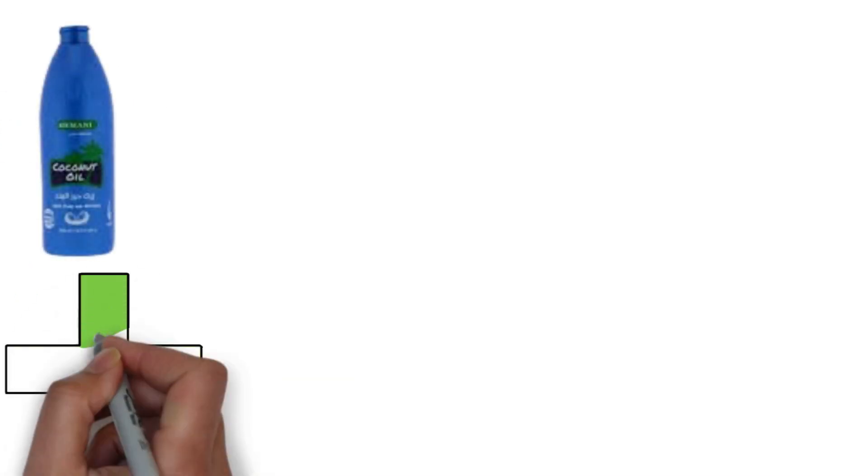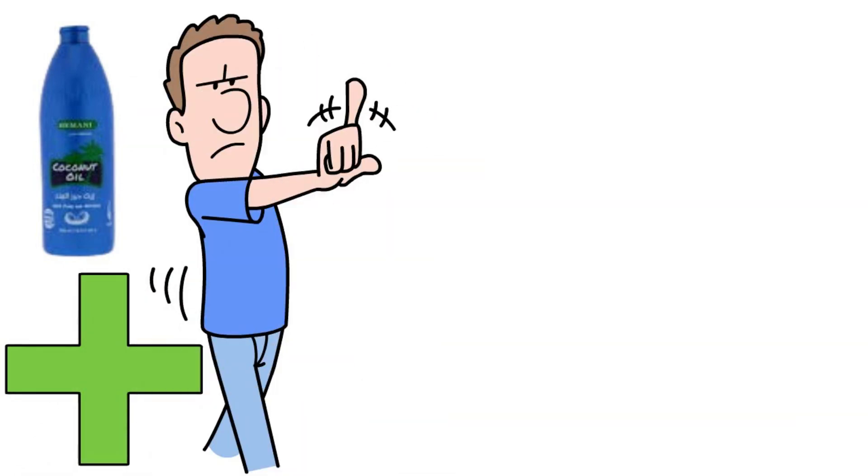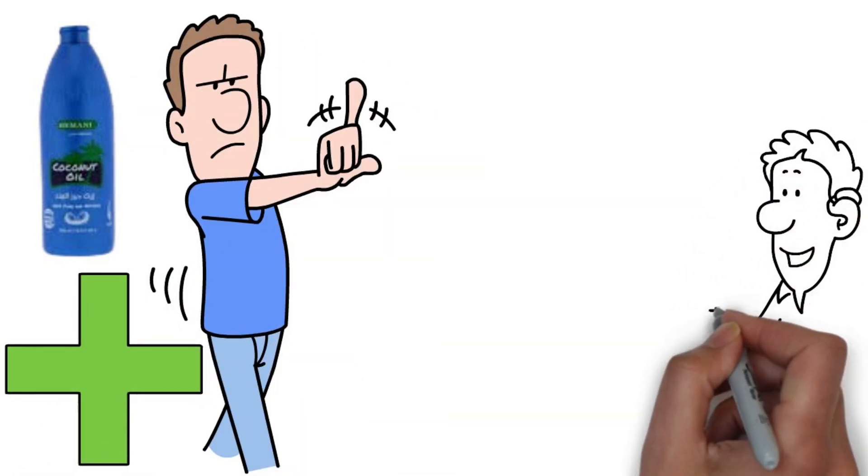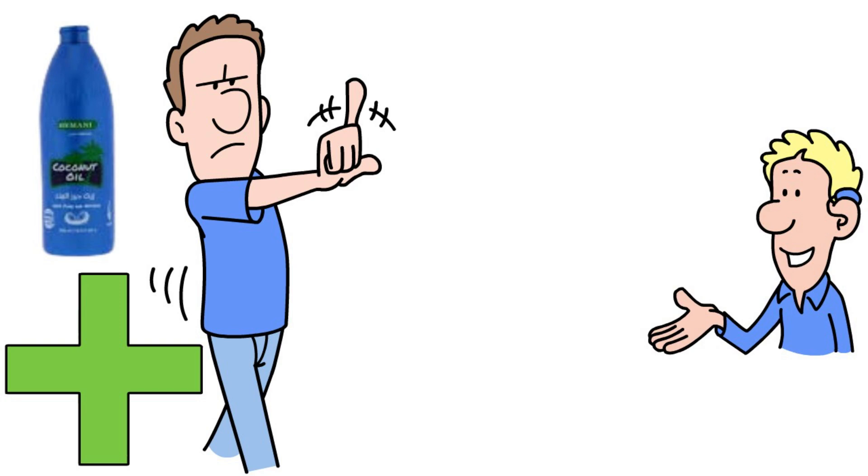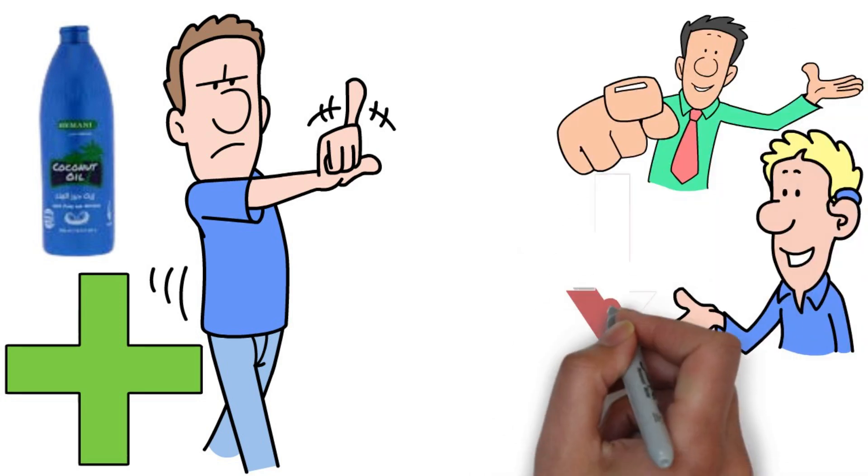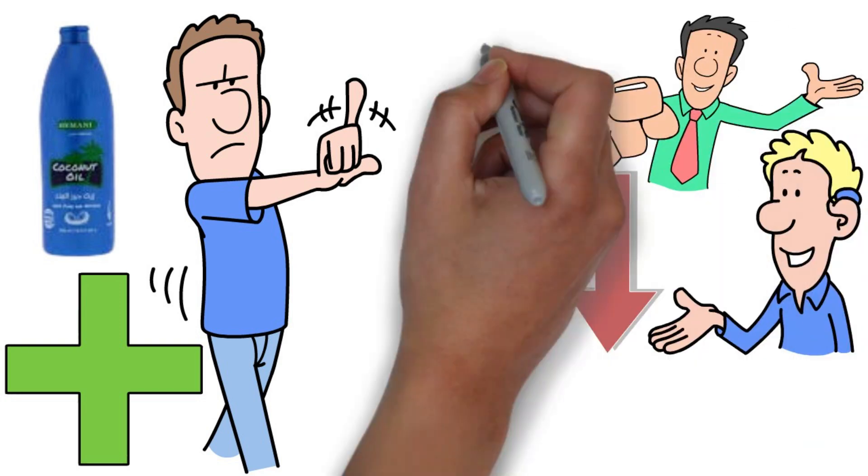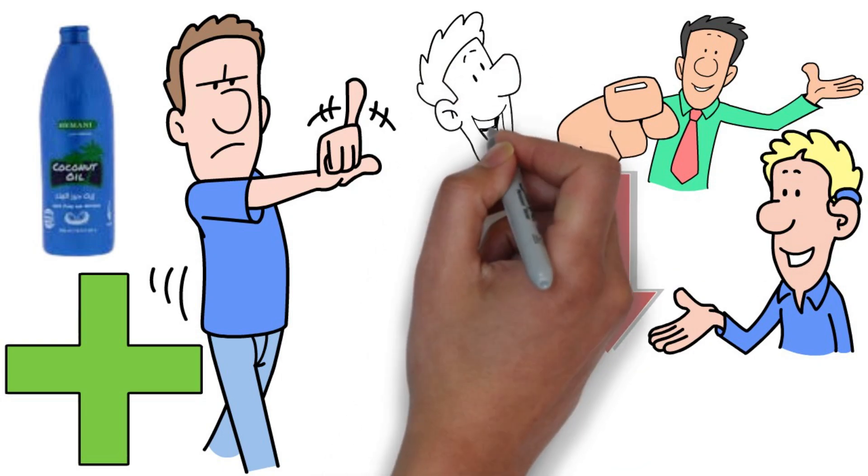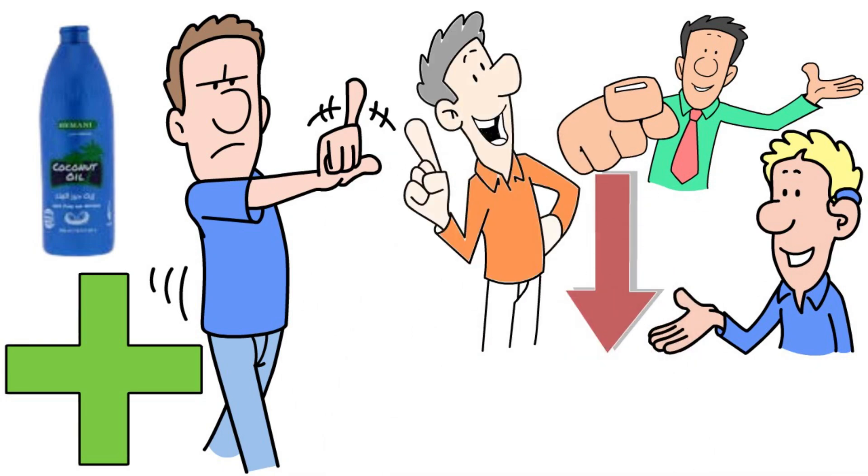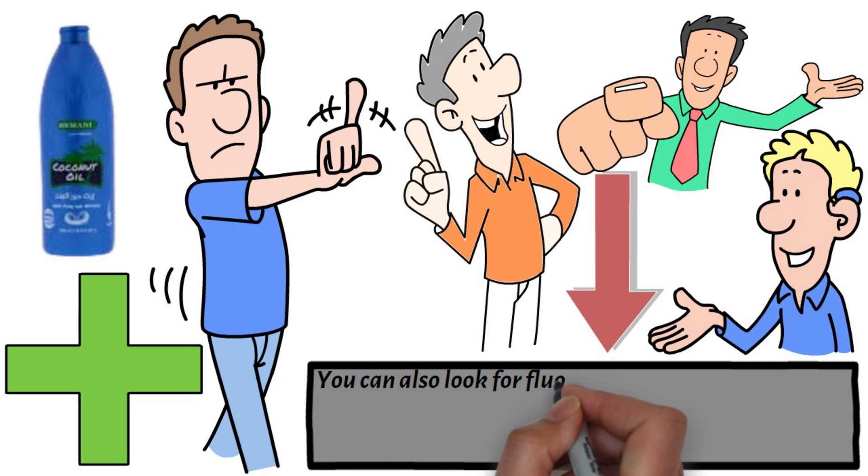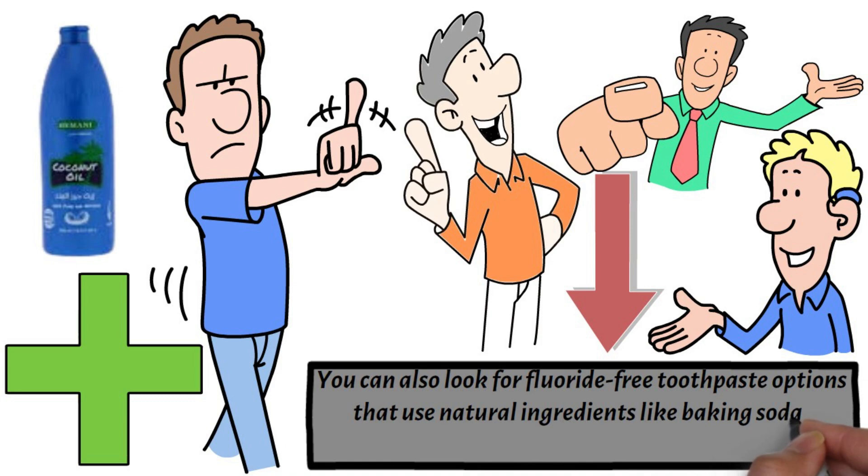Coconut oil is a great natural alternative for maintaining oral health without the risks. Oil pulling, an ancient practice of swishing coconut oil in your mouth can reduce harmful bacteria, whiten teeth, and improve overall oral hygiene. You can also look for fluoride-free toothpaste options that use natural ingredients like baking soda, tea tree oil, and peppermint.